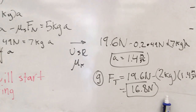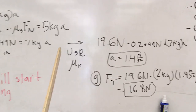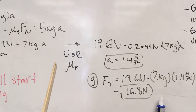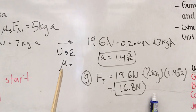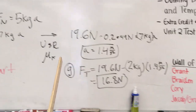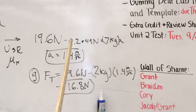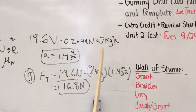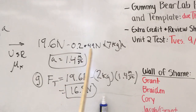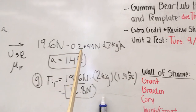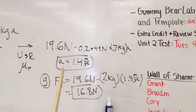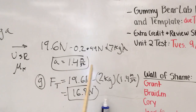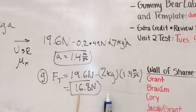When we work out the algebra, we get a positive result for acceleration, which tells us the block will indeed start moving. So now we use the kinetic friction coefficient of 0.2 instead of 0.3, and plugging that into our equation gives us an acceleration of 1.4 meters per second squared.